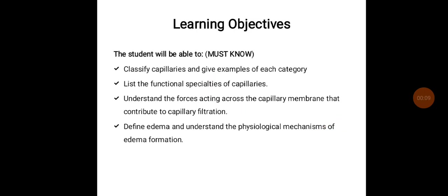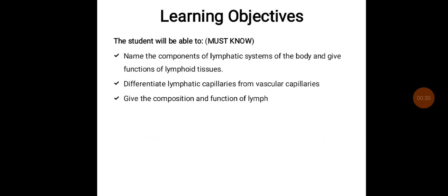Hello students, in this class we will try to learn about capillary circulation and the lymphatic circulation. The objectives of this class would be: classify capillaries and give examples of each category; list functional specialties of capillaries; understand the forces acting across the capillary membrane that contribute to capillary filtration; and define edema and understand physiological mechanisms of edema formation. The learning objectives of lymphatic circulation would be: what are the components of the lymphatic system, give functions of lymphoid tissues, differentiate lymphatic capillaries from vascular capillaries, and give composition and function of lymph.